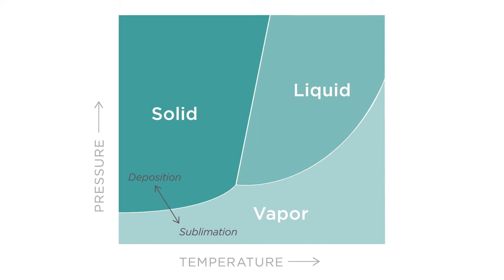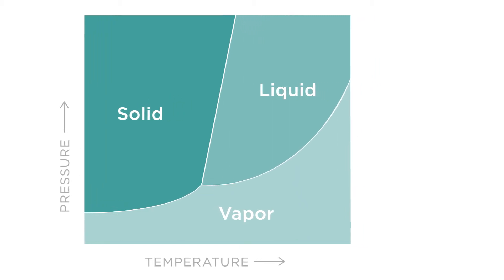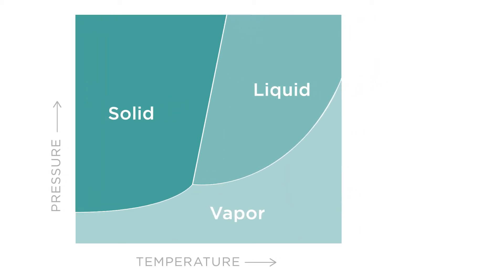The other part of the graph to look at is the triple point. While the boundary lines represent equilibrium between two phases, the triple point is the equilibrium of all three phases. So at the triple point temperature and the triple point pressure, we will have all three phases in equilibrium.